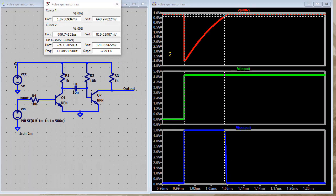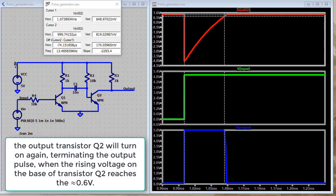It is easy to see that the output transistor Q2 will turn on again terminating the output pulse when the rising voltage on the base of transistor Q2 reaches the 0.6 volts VBE drop required for turn on.